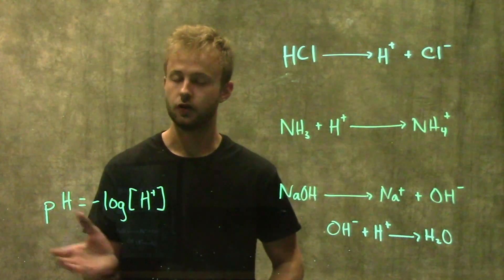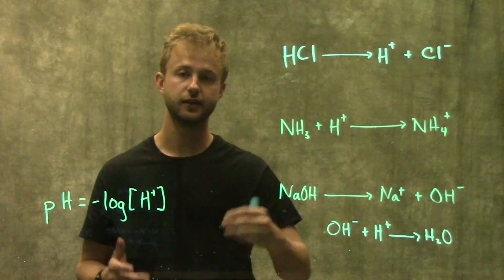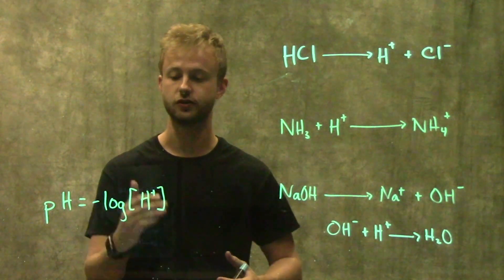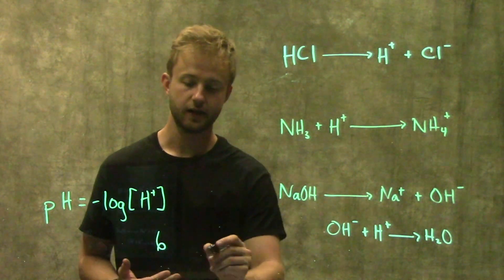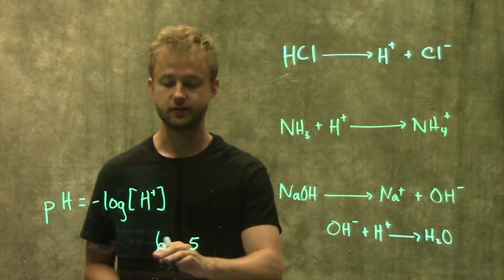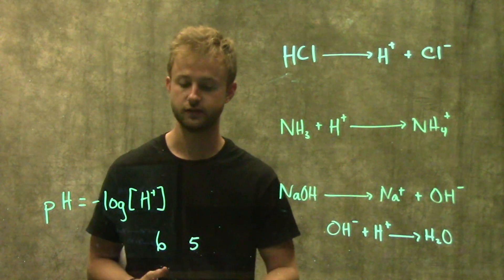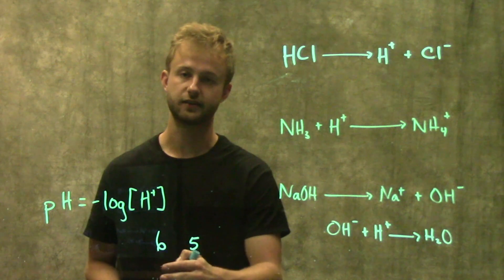It's a logarithmic scale, which means that every change in a pH unit is a tenfold increase or decrease in the concentration of hydrogen atoms. For example, if we start at a pH of 6 and then go down to a pH of 5, which is getting more acidic, that's a ten times difference between these two pH units. So pH of 5 is ten times more acidic than a pH of 6.